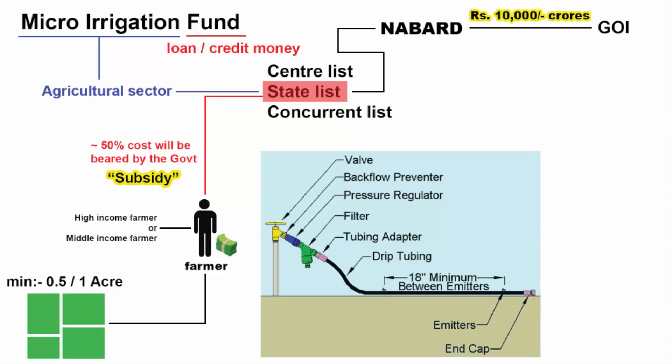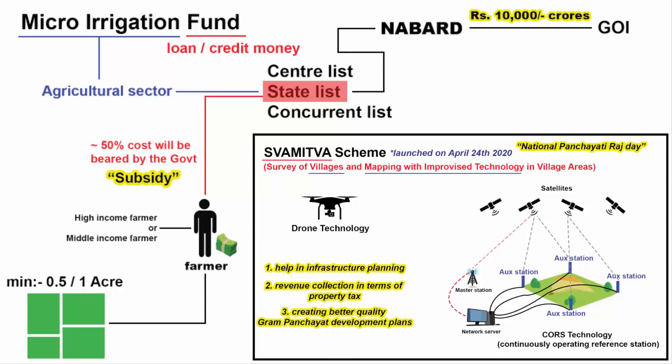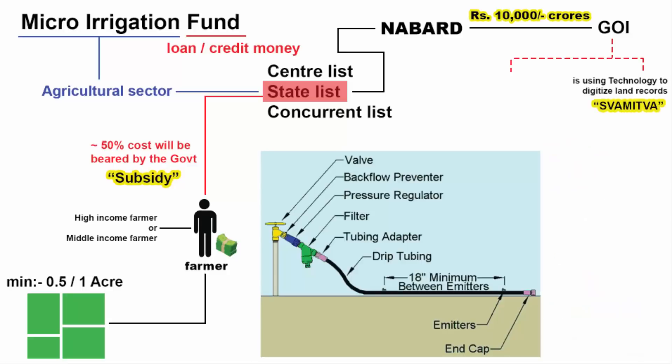Any landless farmer will be left out of the scheme, meaning only middle income or high income farmers can opt for this. Additionally, many states like Jharkhand, Bihar, Gujarat, Kerala and Tamil Nadu have land records that are not yet fully digitized, which also becomes a big problem. However, this connects back to the Swamitva scheme for mapping rural land and providing property cards. On one hand, the government is using technology to digitize land records in rural areas, and on the other hand, it is slowly moving towards efficient irrigation practices.